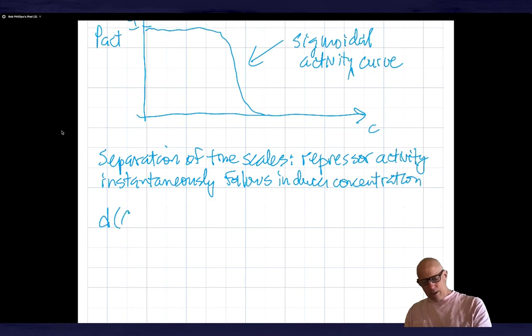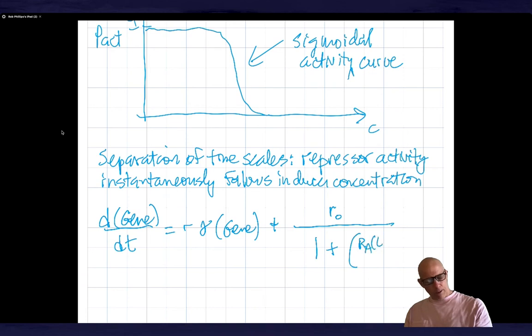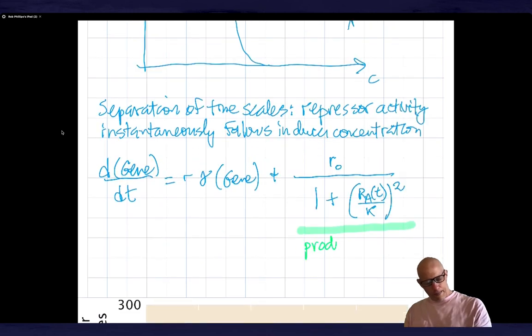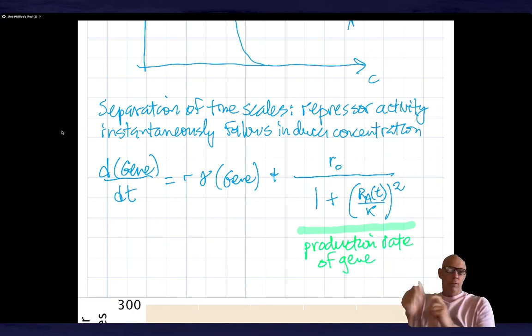In terms of our equations, what this means is, in this particular case, the rate of production of the gene is minus gamma times gene. That's the usual idea of degradation of the protein or alternatively of cell dilution. Then we have some rate at which the gene is synthesized. This is the production rate of gene.